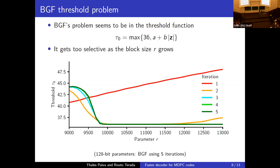The believed root cause is a threshold problem: BGF uses the threshold max(36, A + B * weight(syndrome)) to decide which bits to flip. The weight of the secret syndrome grows with R, so when the block size R gets larger, the threshold grows very large and stops being effective at flipping the correct bits.